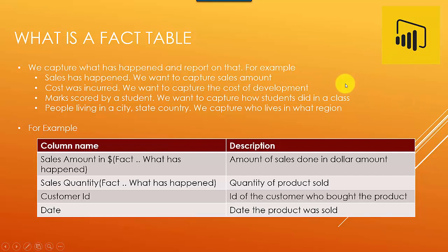For example, sales amount in dollars is a fact - what's happened, how much amount was sold. Sales quantity is again a fact - what has happened, quantity of product sold.